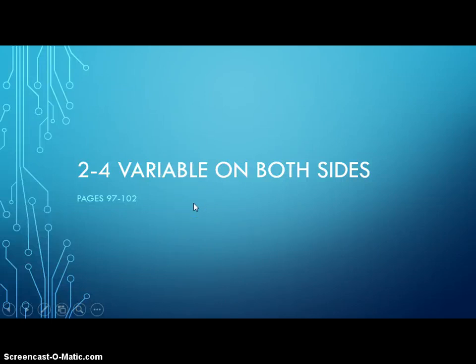Hello. Today we're going to talk about lesson 2.4, variable on both sides. You'll find that in your book, page 97 to 102. Let's get started.